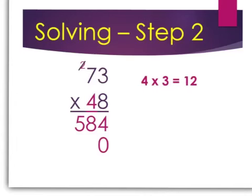4 times 3 is 12, so I write the 2 down and carry the 1. 4 times 7 is 28. I add the 1 to that, that's 29, and I write 29 down.